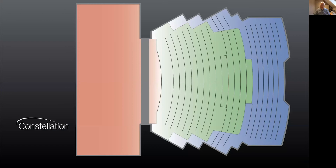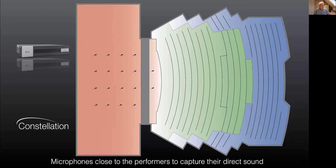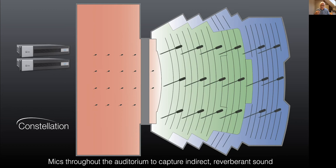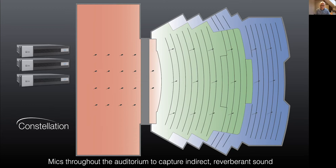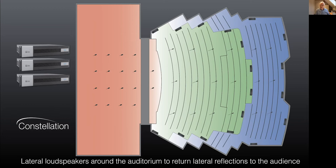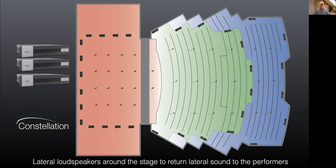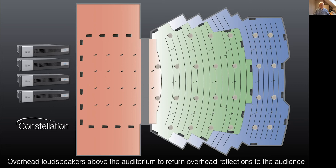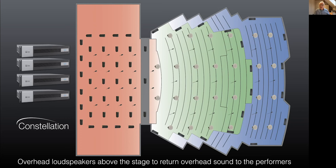How we typically design a Constellation system in a multi-purpose room: we put microphones over the stage, close to the musicians — within five meters of the floor if possible — to get the early energy from the performers. Over the auditorium, we put microphones high above so they pick up just reverberant energy. We then return the energy into the space — here with UP4 Slim loudspeakers on the walls, X20 loudspeakers on the stage, and Ashby loudspeakers above, forming a roof over the stage and auditorium, enveloping the entire room with loudspeakers.